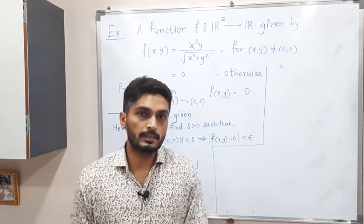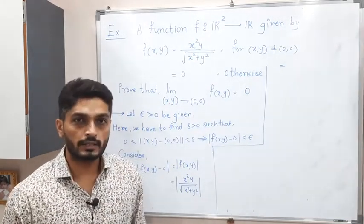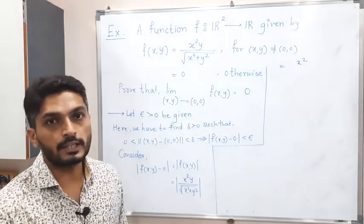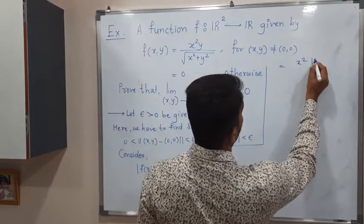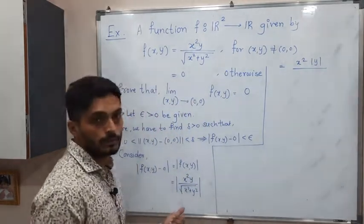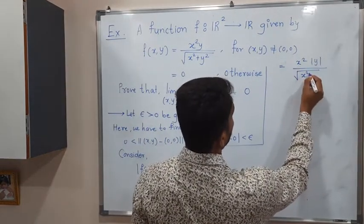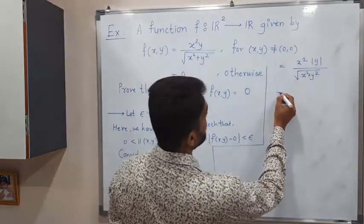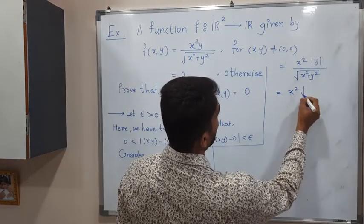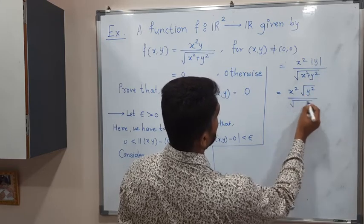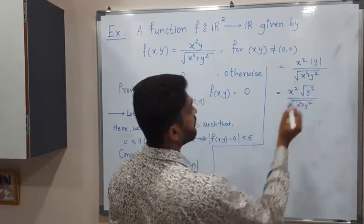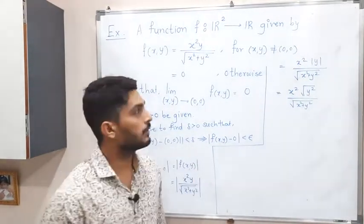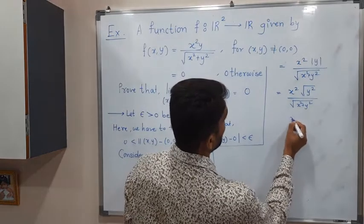Since division is there, we can take separate mods. x² has no need of a mod since a square cannot be negative, so we leave it. For y we take the absolute value, and since we consider a positive square root in the denominator there is no mod needed there. We can write y as the square root of y², so square and square root cancel, giving us |y| in the numerator.